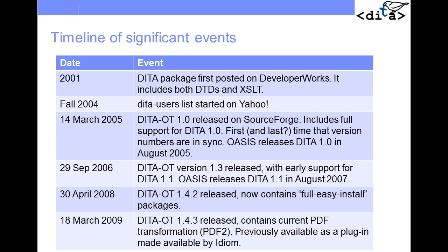Just a basic timeline — I'll put this together in more detail in the near future. Before I became a DITA geek, I was actually trained as a historian. As mentioned, the first DITA package went to DeveloperWorks in 2001. Around 2004, the DITA users' mailing list started, and folks at IBM began the work of donating DITA to OASIS and setting up the DITA Open Toolkit open source project. The very first toolkit release happened in March 2005, followed later that year by the official OASIS release of DITA 1.0.